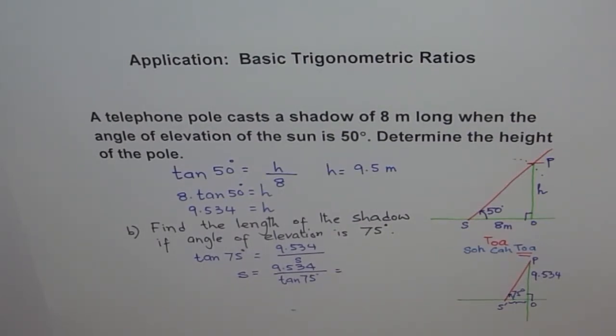So 9.534 divided by tan of 75 degrees gives us 2.5546. We can approximate this to two decimal places: 2.55 meters.